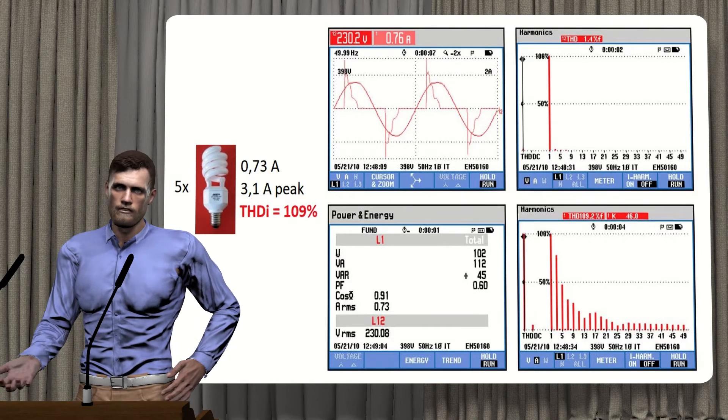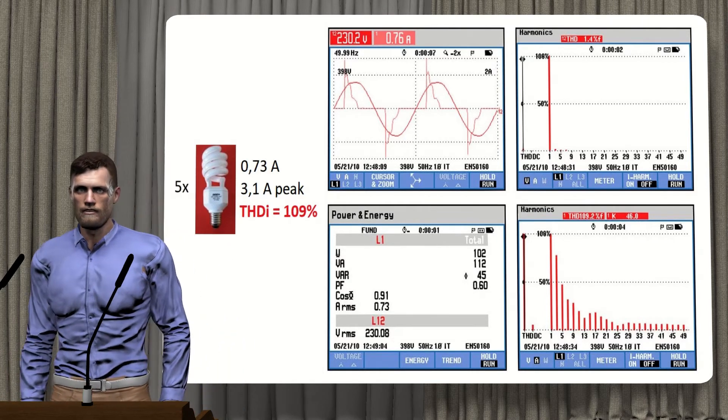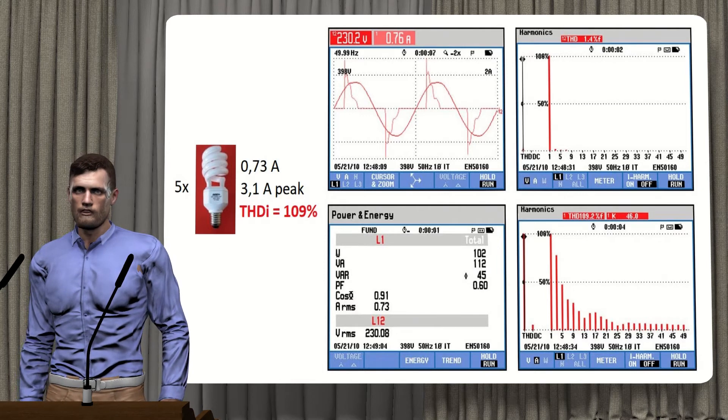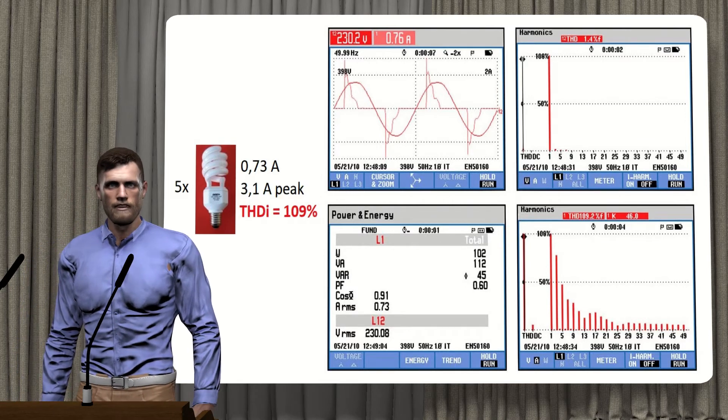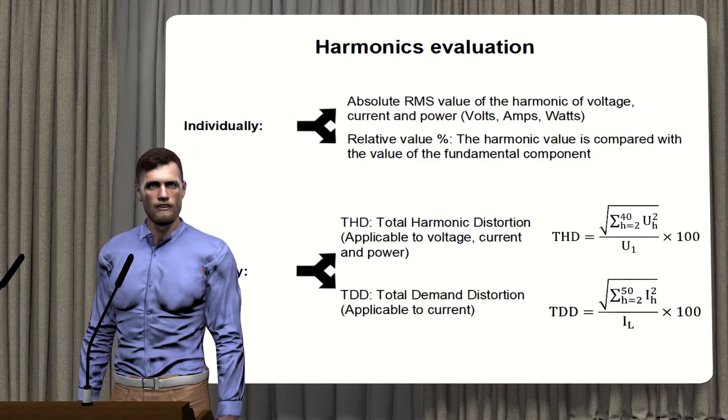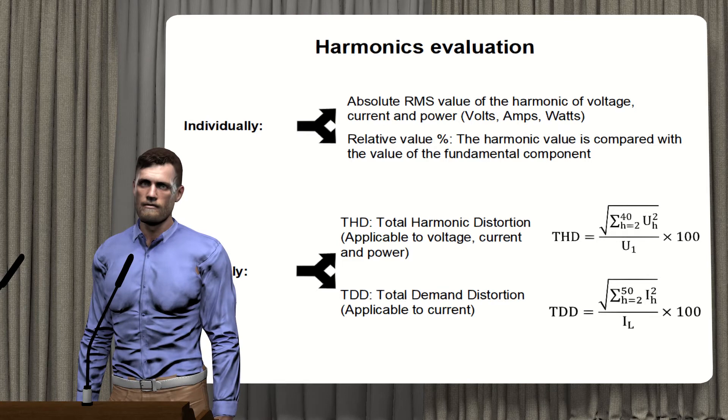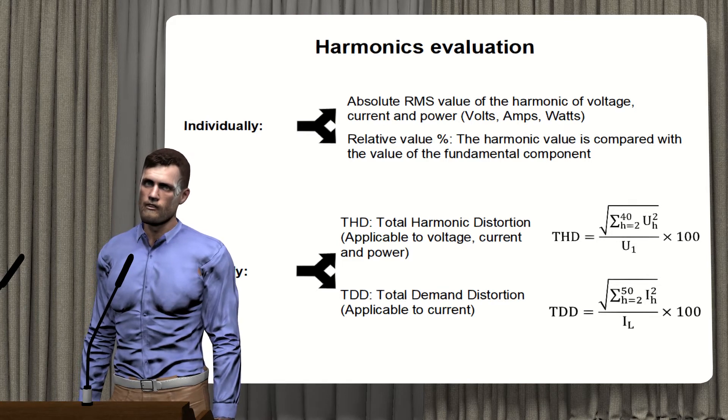Now, if we consider thousands of light bulbs lit at the same time, the situation can be very different. Therefore, to better reflect the impact that current harmonics have on the installation, we can use another parameter called TDD, that is, total demand distortion.